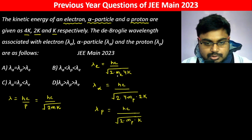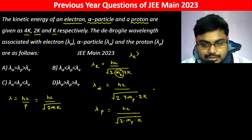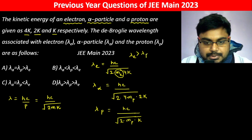So it will be clearly visible. Mass of electron is very small, so lambda e is greatest, greater than lambda p, greater than lambda alpha.